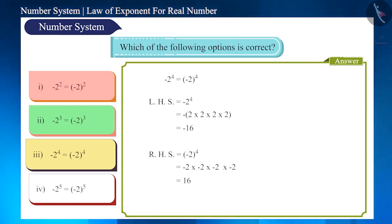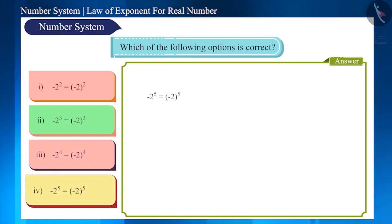In the third option, on the left side, the power of -2 is 4. Its value is -16. But on the right side, the power of -2 in bracket is 4 and its value is 16. Here the left hand side is not equal to the right hand side, so this option is incorrect.